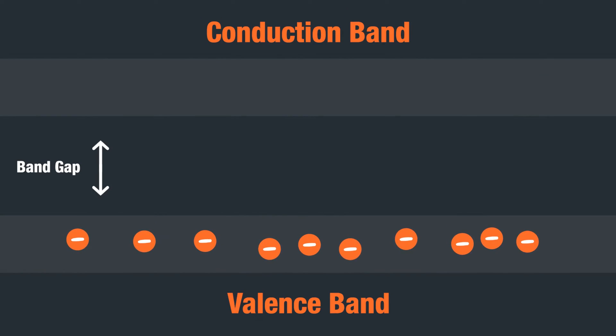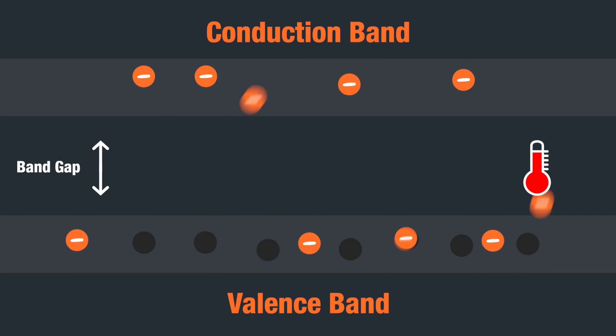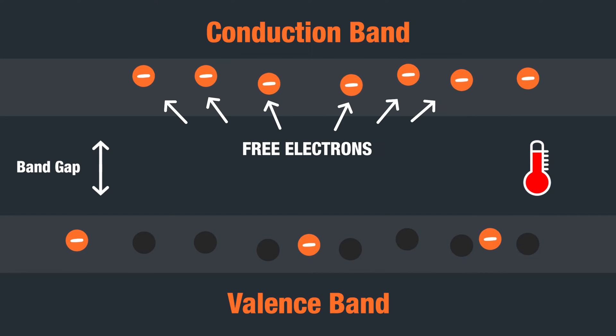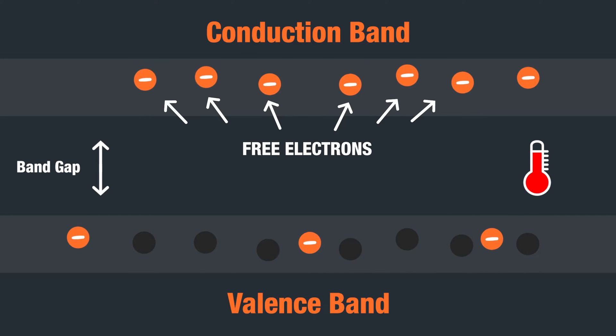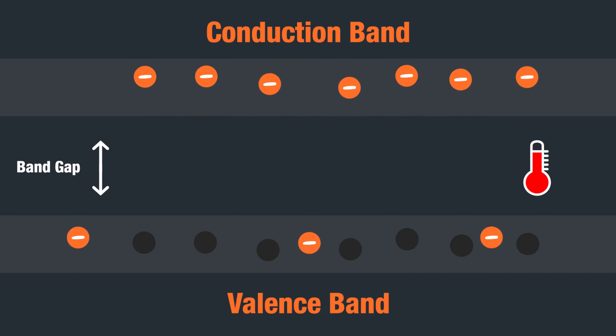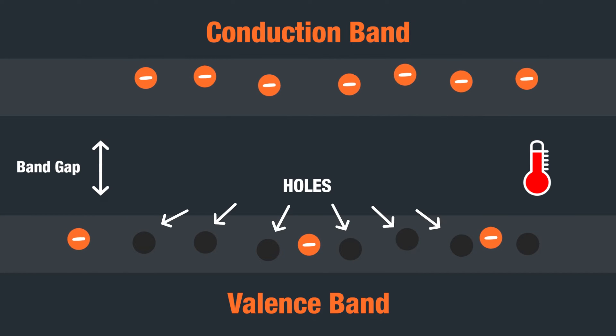In an intrinsic semiconductor material, free electrons are produced when the material receives sufficient thermal energy that provides valence electrons from the valence band enough energy to jump to the conduction band and turn into free electrons. When valence electrons jump to the conduction band, they leave vacancies in the valence band. These vacancies are called holes. The number of holes in the valence band is equal to the number of free electrons in the conduction band in this un-doped intrinsic material.